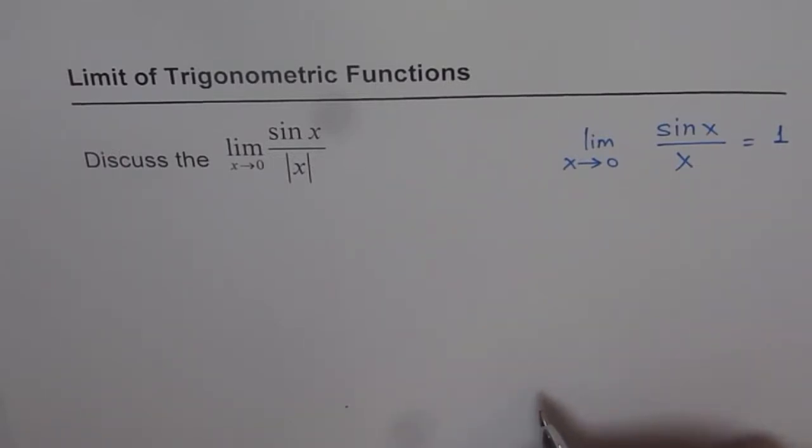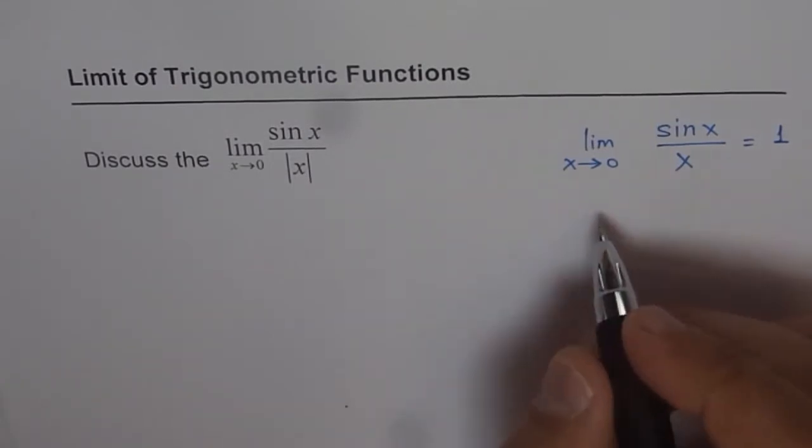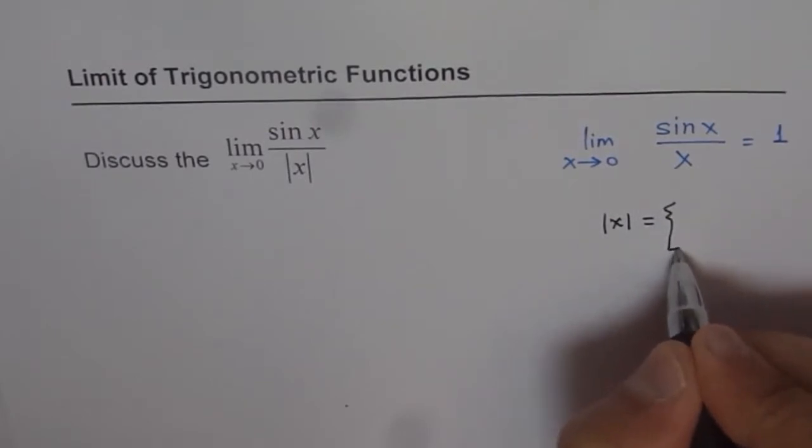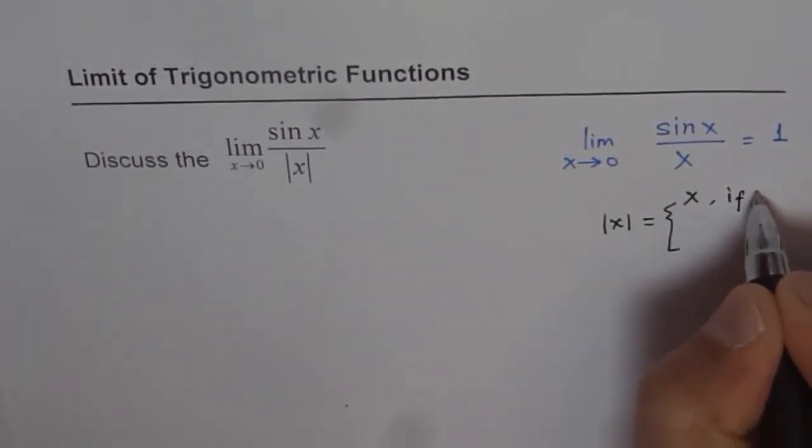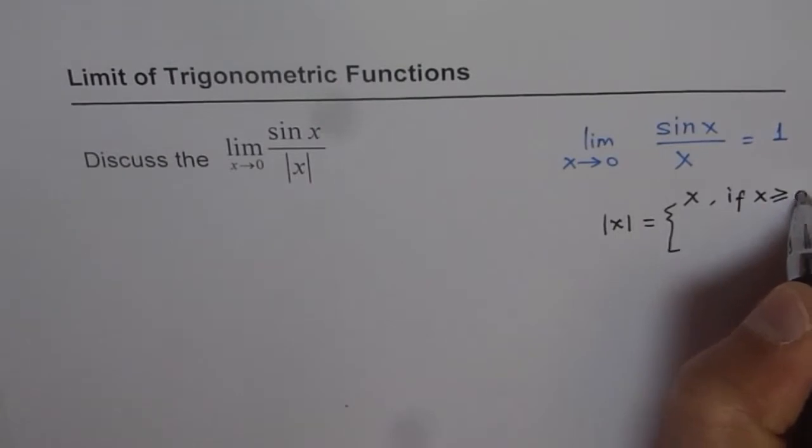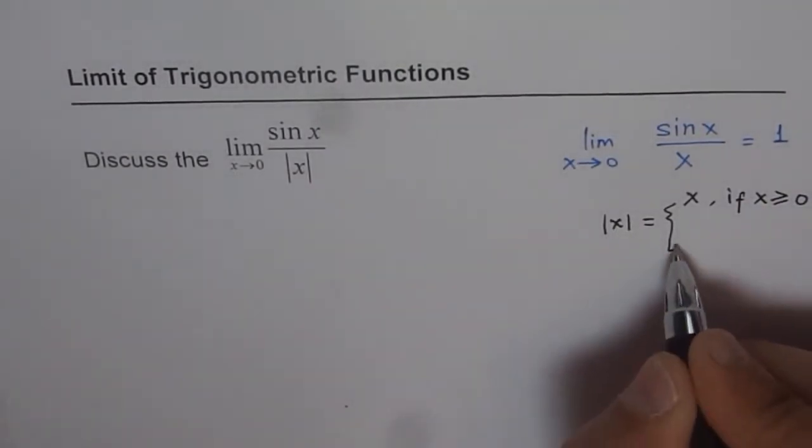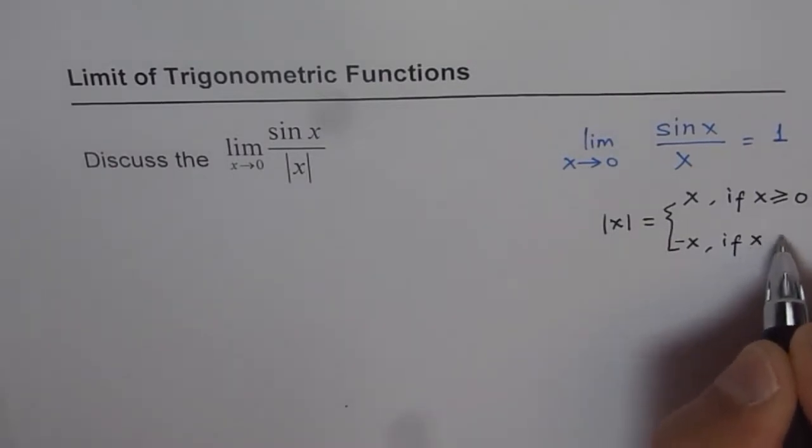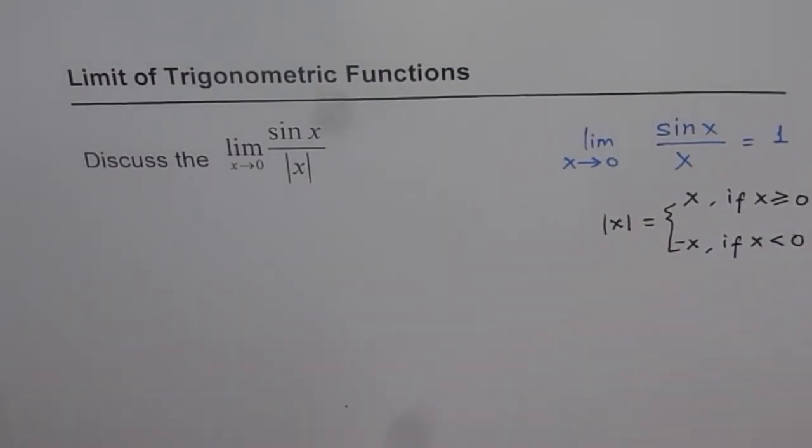So, first thing is, we should understand what is absolute x. Absolute x is defined like this. Absolute x is equal to x if x is greater than or equal to 0. But, absolute x is negative of x if x is less than 0. That is what it is.